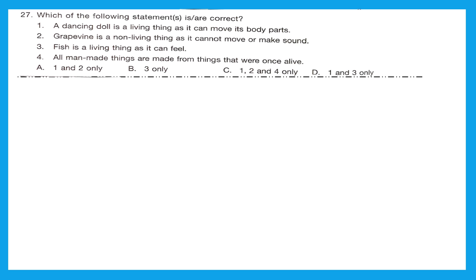Question 27: which of the following statements is correct? Statement 1: a dancing doll is a living thing as it can move its body parts — wrong, a dancing doll is a non-living man-made thing. Statement 2: a grapevine is a non-living thing as it cannot move or make sound — also wrong, plants are living things. Statement 3: fish is a living thing as it can feel — absolutely correct. Statement 4: all man-made things are made from things that were once alive — incorrect, some are made from things that were never alive. The only right answer is statement 3, and the correct option is option B.